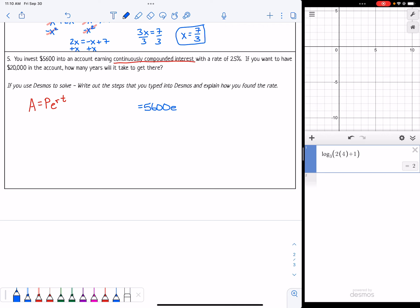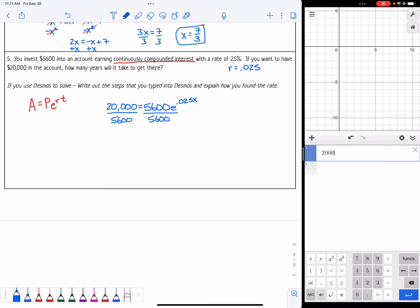$5,600 is how much we invested, so that's our principal. The e is just going to be a button in our calculator. 2.5% means we have a decimal of 0.025 for the rate. We're looking for time, so we could put t, but our calculator prefers x if we need to use it. Then if we want to have $20,000 remaining. What we can do to solve this is divide both sides by 5,600.